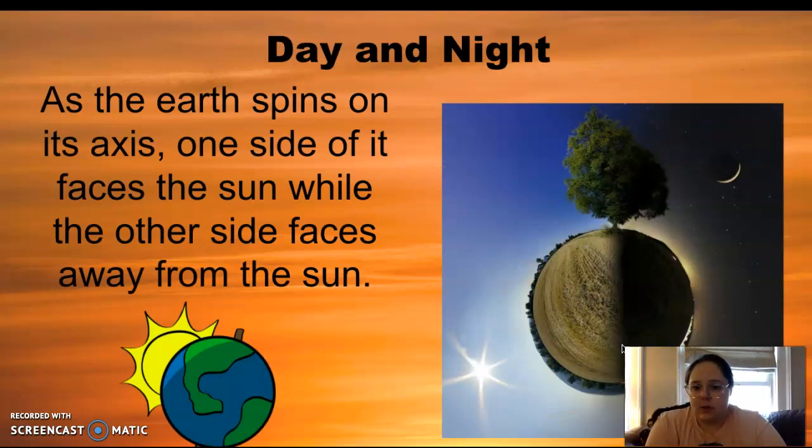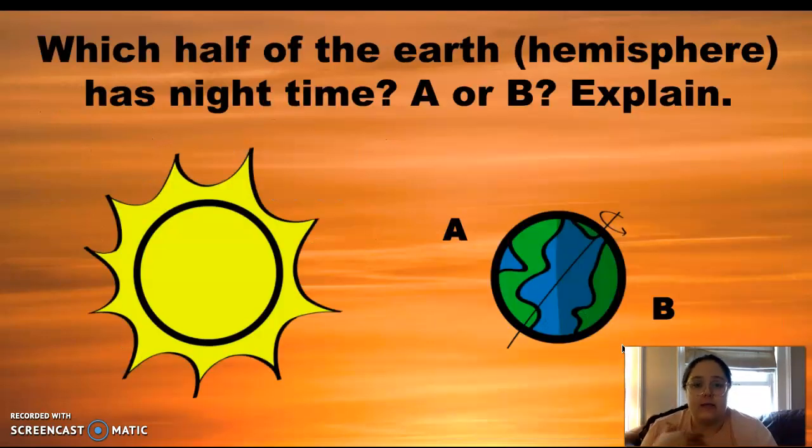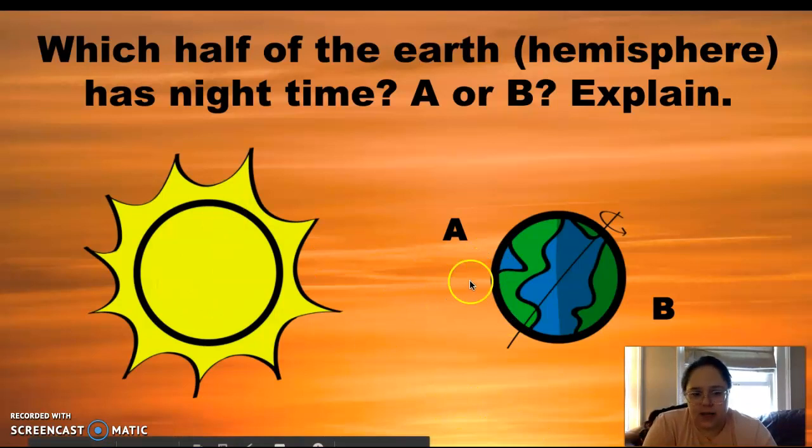As the Earth spins, one side faces the sun while the other faces away from the sun. And this is why it could be daylight on one side of the Earth and nighttime on the other side. As you can see in this picture, the sun can only hit one side of the Earth at a time.